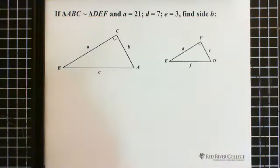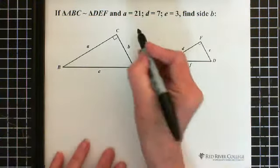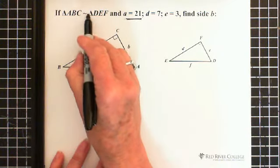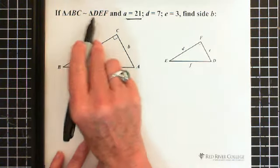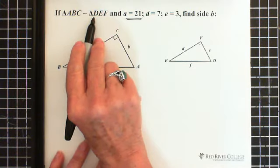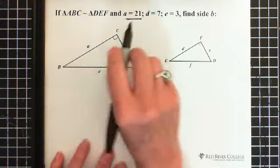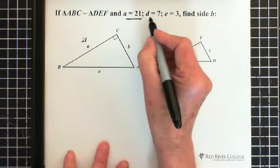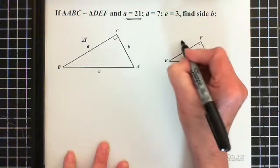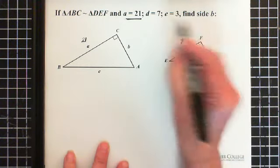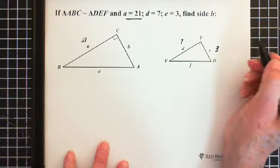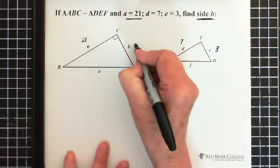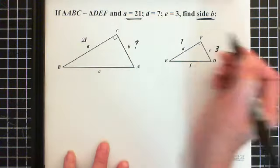Here we have similar triangles. We're told that side A is 21, and also this information, this little squiggly, tells you that these two triangles are similar triangles. So A is 21, D is 7, and E is 3, and we're trying to find, or we want to find, side B. So this is our question mark, side B.